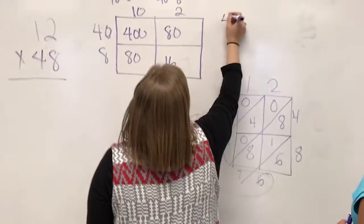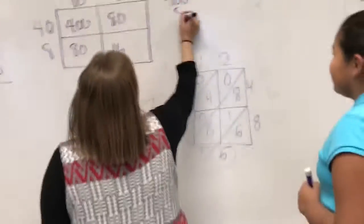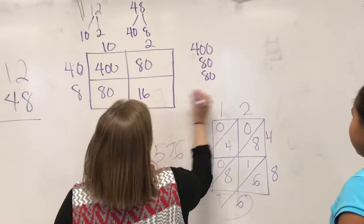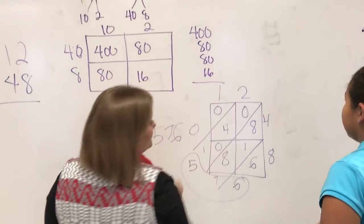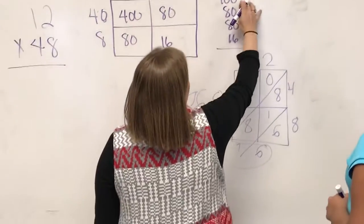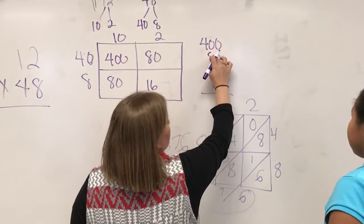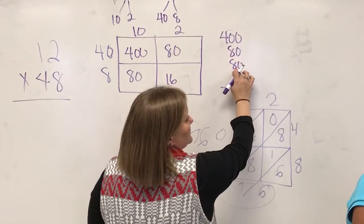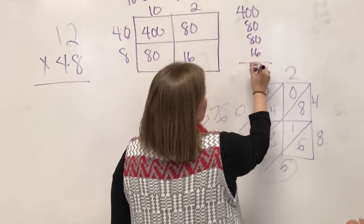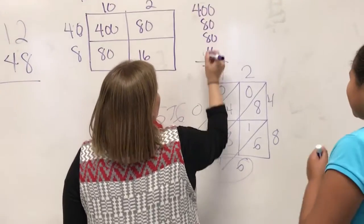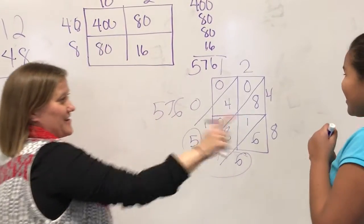This is another way. We have 400, 80, 80, and 16. So let's see if we get the same number. 0 plus 0 plus 0 plus 6 is 6, 0 plus 8 is 8, plus 8 is 16, plus 1 is 7. Carry that, 5.